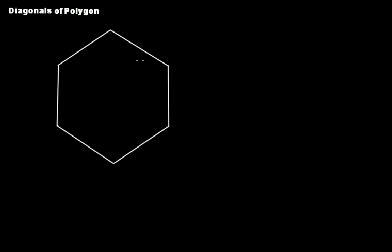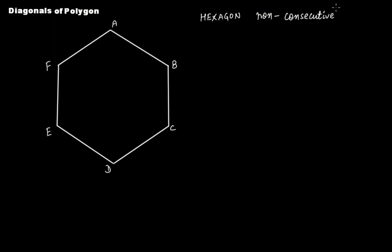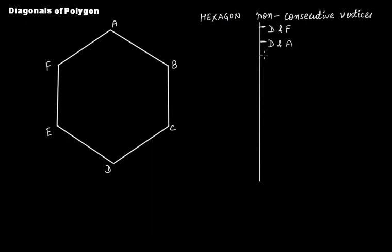This is a six-sided polygon called a hexagon. Let's name all the vertices A, B, C, D, E, and F. The pairs of non-consecutive vertices starting from D are: D and F, D and A, D and B. Then from E: E and A, E and B, E and C.